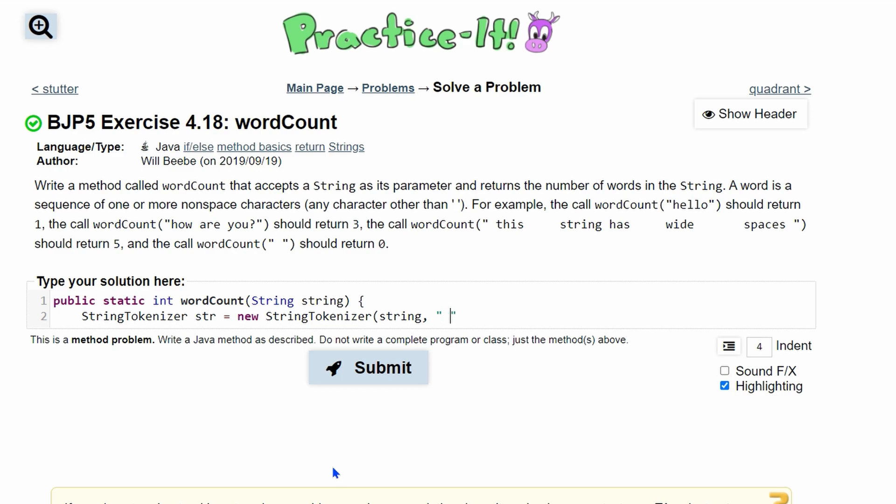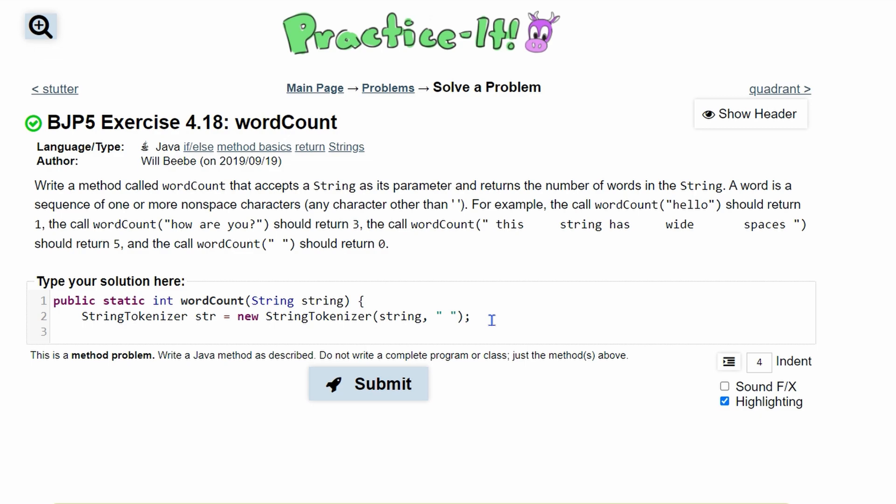The delimiter is going to be this whitespace here. We have multiple white spaces here, but we can just have one whitespace because it will take care of this one, then it'll go to the next one and analyze it, then this one, until it hits the next thing. So StringTokenizer's done.